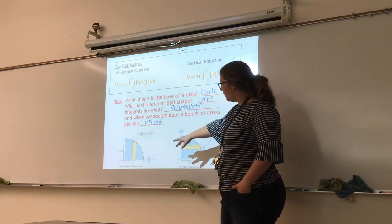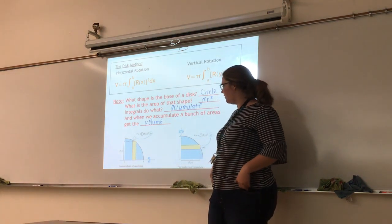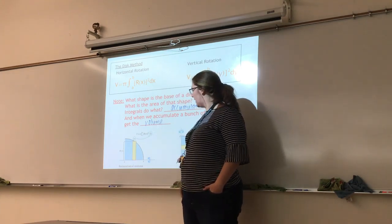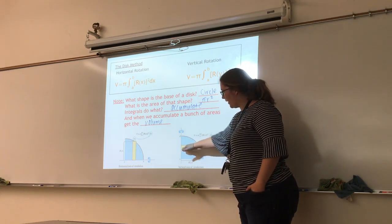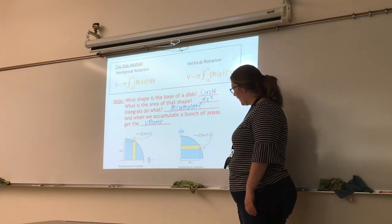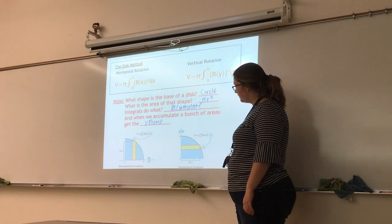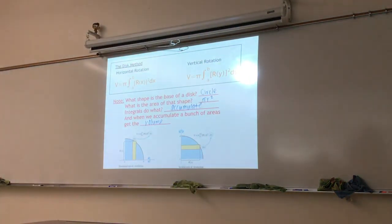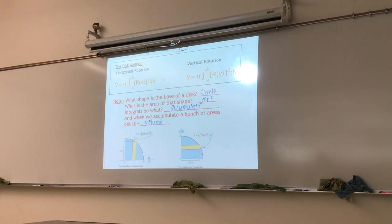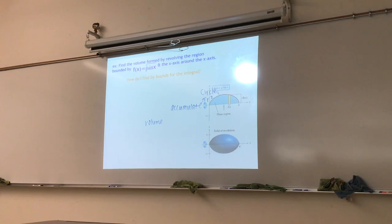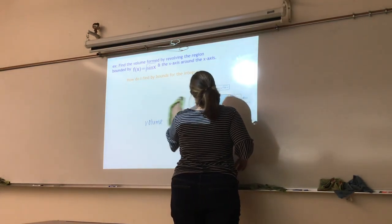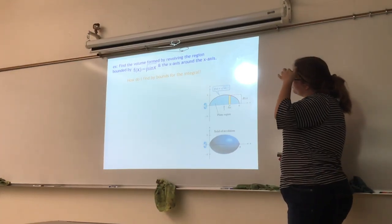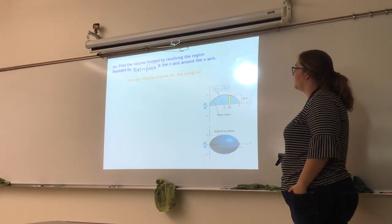Here's a visual of what's happening — we're cutting out these discs, or we're cutting out these rectangles. That's our radius. When we spin it, that's what's going to create the disc. Delta x is our dx. If we do it with respect to y, we're getting a different R of x and that's going to create a different shape. Find the volume formed by revolving the region bounded by f of x equals the square root of sin x and the x-axis around the x-axis.